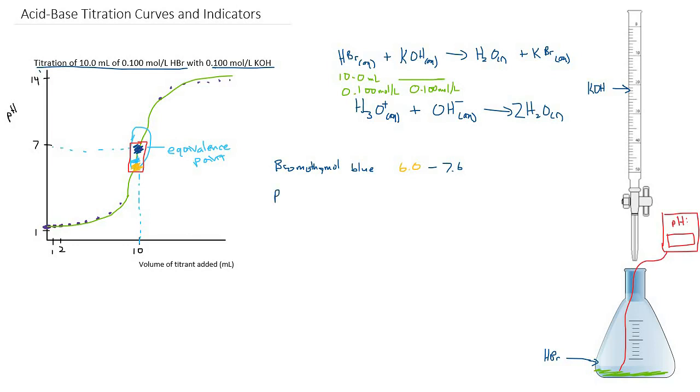We could have chosen phenol red, which is yellow at 6.6 but turns red at 8.0. That would be a slightly different range, but it's still going to encapsulate our equivalence point. Since our graph is so steep here, we can be confident that for either one of these indicators, one drop is going to shoot it past that point and turn it the color.